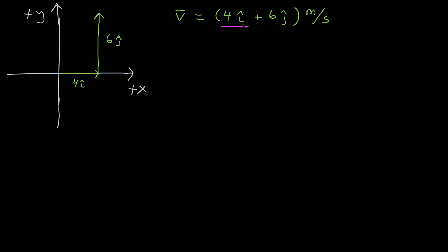There's a 4 i-hat along the x-axis, and then a 6 j-hat along the y-axis. There are magnitudes of 4 and 6, each of those vectors, and they point on the positive x and the positive y, respectively, because there's no minus signs.